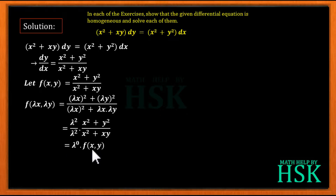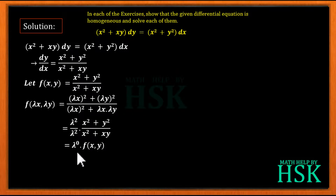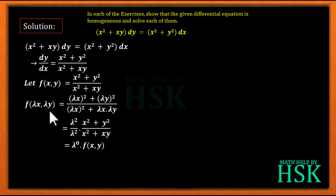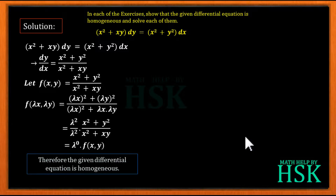This shows that f(x, y) is a homogeneous function of degree 0. Whenever dy/dx equals a homogeneous function of degree 0, the given equation is a homogeneous differential equation. So to prove homogeneity, it is enough to show that f(λx, λy) = λ⁰ · f(x, y). We can also prove the same by another method.